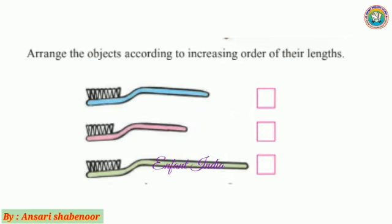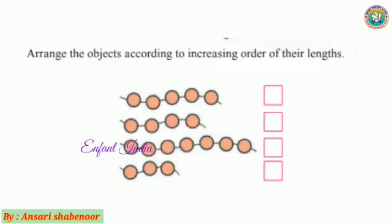See here there are one, two, three brushes. How many brushes are there? Three. And we have to give them numbers according to their lengths. The shortest one we will mark as one, the one in the middle is second, and the last one is third. First, second, third.